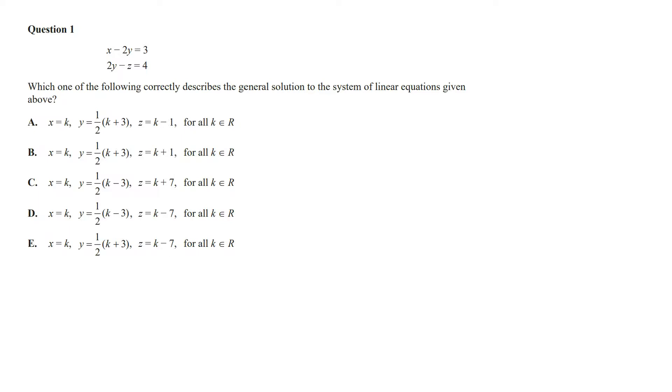into the first equation, we're going to get k minus 2y is equal to 3. Rearranging this to solve for y, we're going to get k minus 3 is equal to 2y, and so y is going to equal a half times k minus 3.